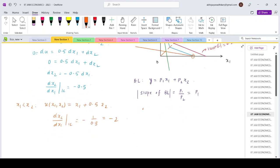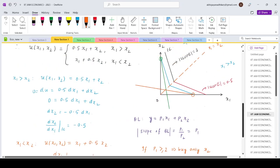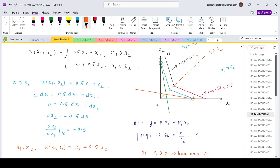So if p₁ is greater than 2, then buy only x₂. And if p₁ is less than or equal to 0.5, then buy only x₁. These are the two conditions in which at the optimal the consumer is buying only one of the goods.